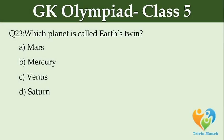Which planet is called Earth's twin? Option A: Mars. Option B: Mercury. Option C: Venus. Option D: Saturn.